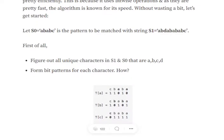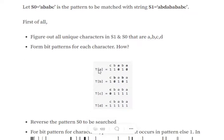Now we need to form bit patterns for each character. Using the s0 string, for which we are trying to find a fuzzy match in s1, we create bit patterns for each character. Assume them to be temp arrays: ta, tb, tc, td, where the parameter — a, b, c, or d — refers to the bit pattern for that particular character. So ta means the bit pattern is for character a, and tb means the bit pattern is for character b.